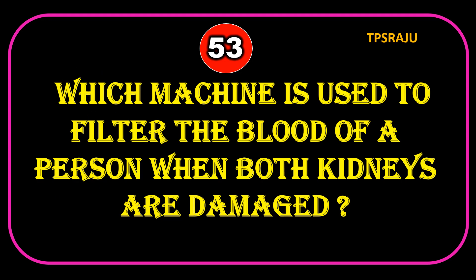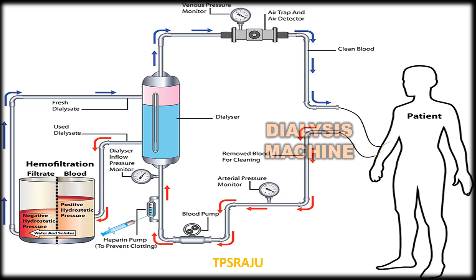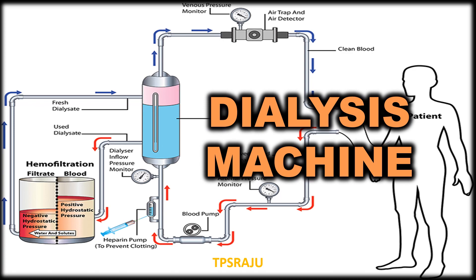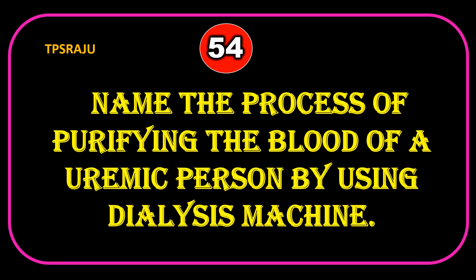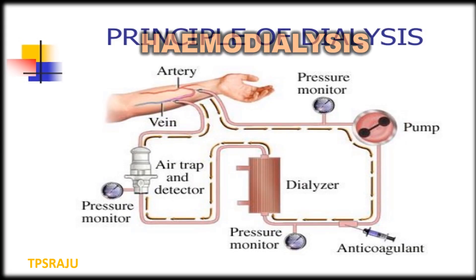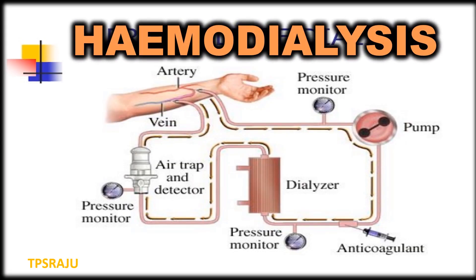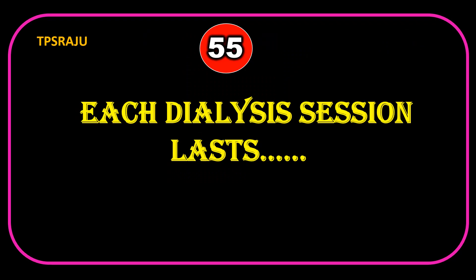Which machine is used to filter the blood of a person when both kidneys are damaged? Dialysis machine. Name the process of purifying the blood of a uremic person by using a dialysis machine. Hemodialysis. Each dialysis session lasts 3–6 hours.